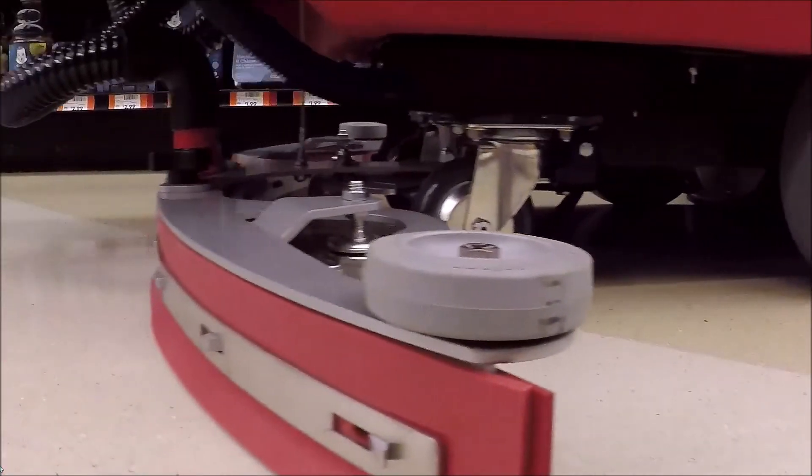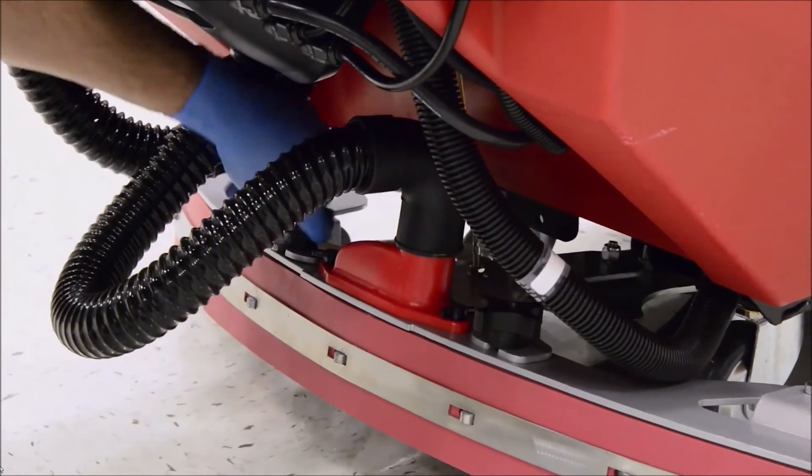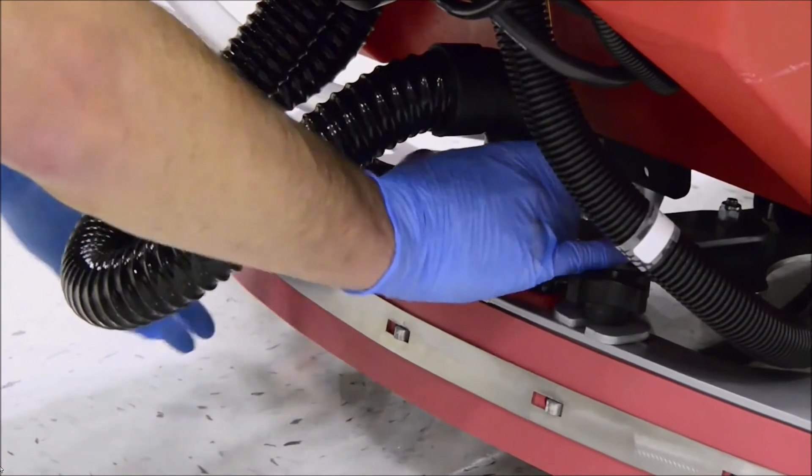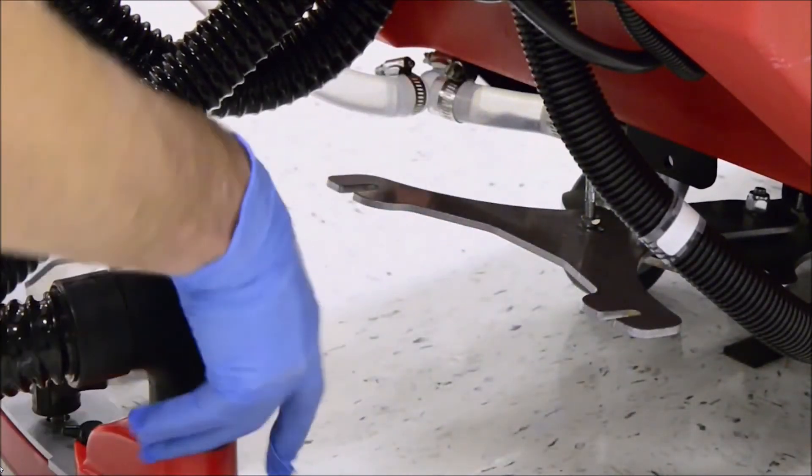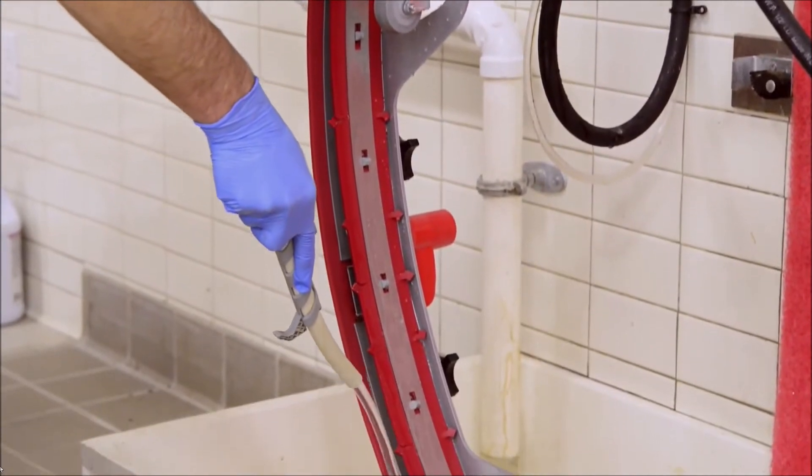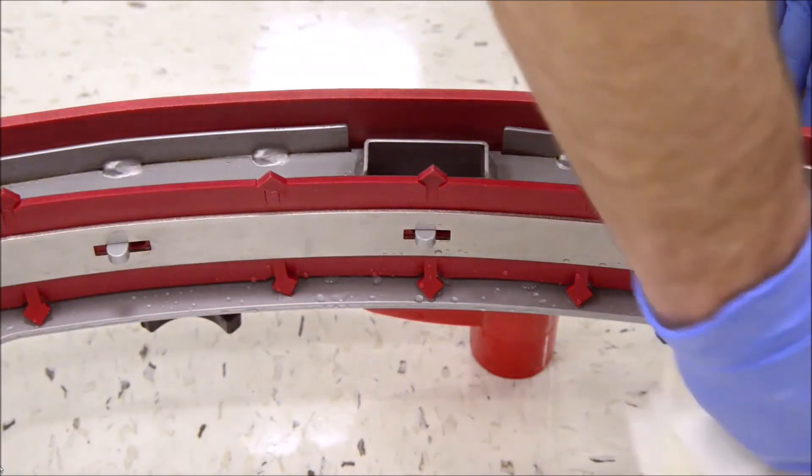It is now time to maintain your squeegee system. Remove the squeegee by loosening the two knobs on either side of the recovery hose. Then slide the squeegee assembly off the machine and attach the recovery hose. Rinse the assembly to remove any dirt or debris. Finish by wiping down the front and rear squeegees to dry and removing any remaining debris.